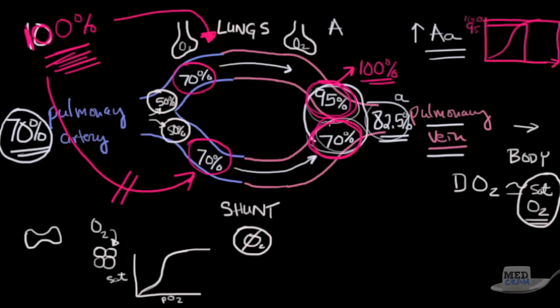But because this area here never got to see the 100% oxygen, because by definition it is a shunt, we still have 70% in this limb. And instead of having an 82.5% saturation, the new saturation is going to be only 85%.